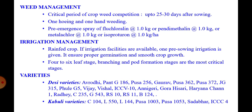Regarding irrigation management, mostly this crop is grown as a rain-fed crop. If irrigation facilities are available, one pre-sowing irrigation should be given to ensure proper germination and smooth crop growth. The 4-6 leaf stage, branching and pod formation stages are the critical growth stages. Irrigation can be given at these critical stages. Light irrigation should be given — heavy irrigation is always harmful to chickpea as it enhances vegetative growth and reduces yield ultimately.